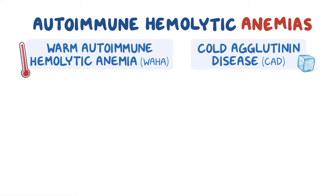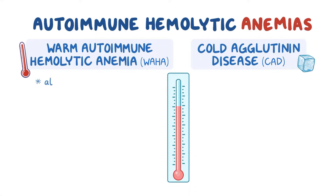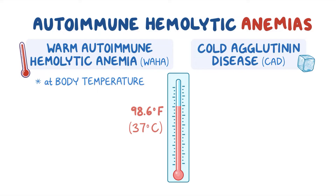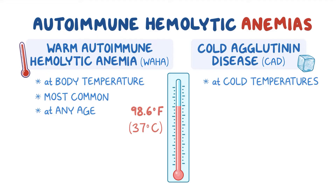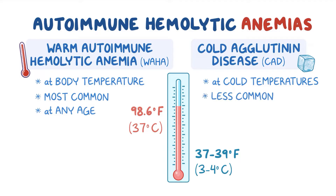In WAHA, hemolysis occurs more frequently at body temperature, hence the name warm. It is the most common autoimmune hemolytic anemia and can occur at any age. In CAD, hemolysis occurs more frequently at cold temperatures, hence the name cold, usually between 37 to 39 degrees Fahrenheit or 3 to 4 degrees Celsius. CAD is less common and generally occurs between 40 to 80 years of age.